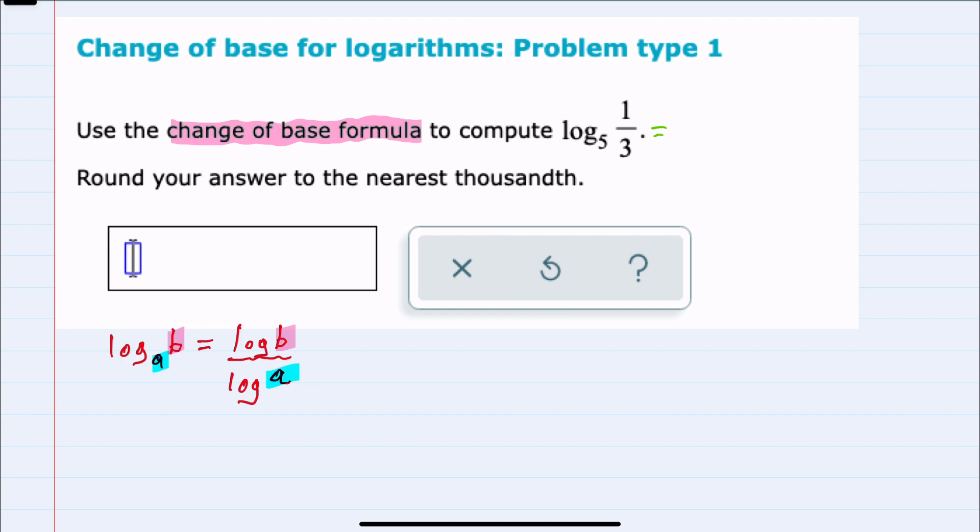So in this example we could change log base 5 to a log base 10, which we would have on a calculator, of the one-third divided by the log base 10 of the prior base which is 5.